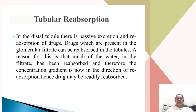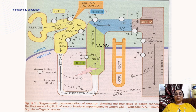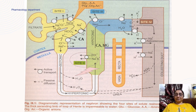In the distal tubules there is passive excretion and reabsorption of drugs. Drugs present in the glomerular filtrate can be reabsorbed in the tubule because much of the water in the filtrate has been reabsorbed, creating a concentration gradient in the direction of reabsorption, so drug may be readily reabsorbed. In the picture of the renal nephron, drugs are filtered into the glomeruli, enter the proximal tubule, pass through the loop of Henle, and into the distal convoluted tubule where water is reabsorbed along with the drug.